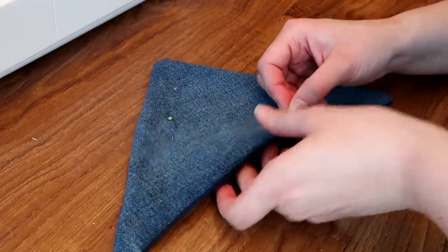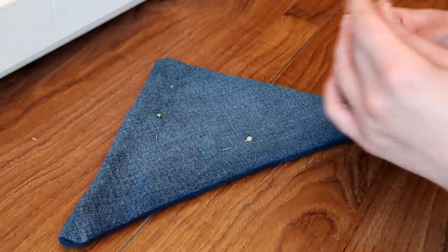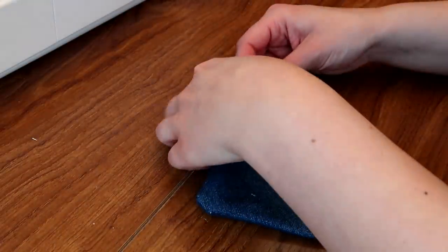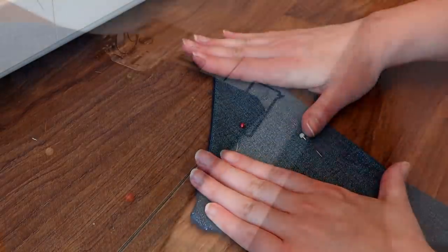Now the next part is optional but whenever I make hammocks I like to sort of go around the outside, put a bit of a border on the hammock. This just helps the hammock keep its shape and makes it feel more robust.